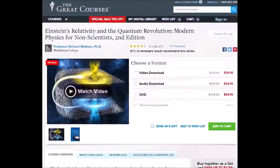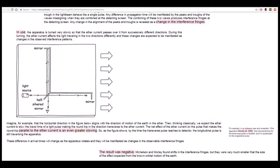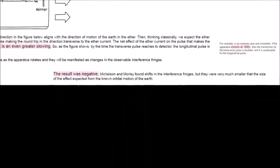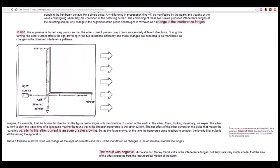Michelson and Morley found shifts in the interference fringes but they were very much smaller than the size of the effect expected from the non-orbital motion of the earth. John D. Norton.